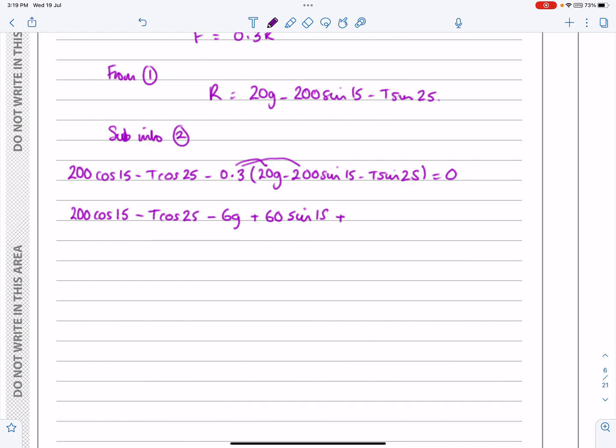0.3 T sine 25 equals 0 so I've basically just multiplied out that bracket